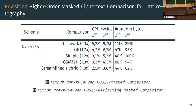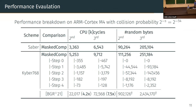Regarding the question of whether the collision probability depends on the masking order: it does not. The number of bits we compute on does depend on the collision probability. We set it at 2^{-54} to ensure we compute on 64-bit values. The paper also has a table for a larger collision probability of 2^{-118}, computing on 128-bit values.